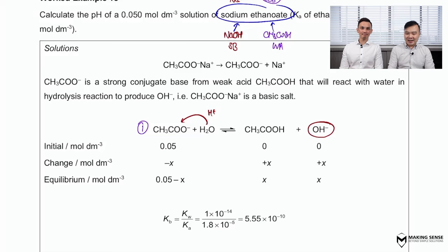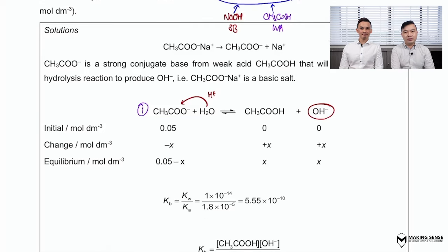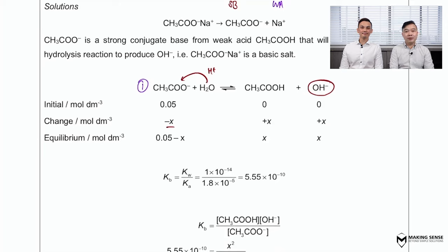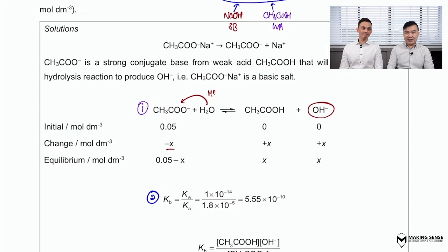Moving on to calculations, the first step includes setting up the ICE table where you let x be the amount of acetate ion that has dissociated or undergone hydrolysis, and we establish the equilibrium concentrations. In step 2, we use these equilibrium concentrations and substitute them into a dissociation constant. William, knowing that your acetate ion is a basic salt, what kind of dissociation constant should you be using?